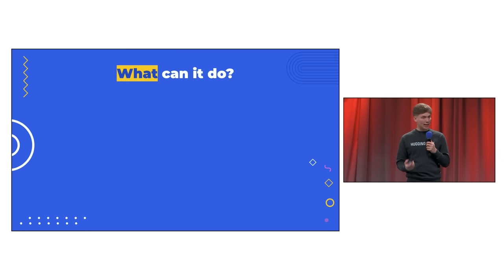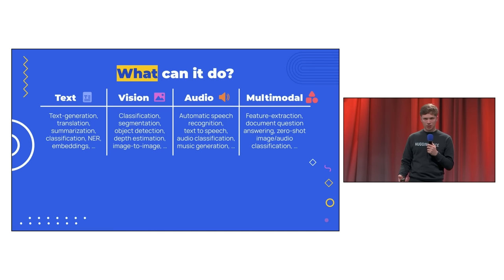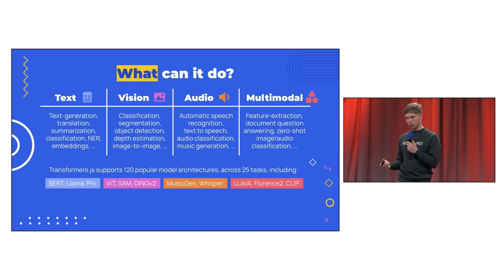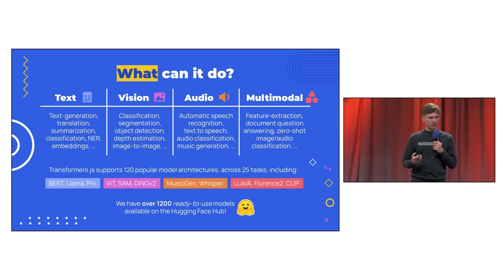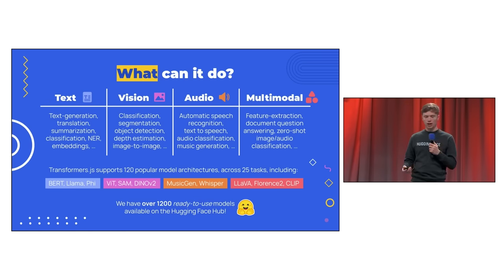In the last 18 months, we've already added support for 25 popular ML tasks, including text generation, object detection, and speech recognition, just to name a few. In total, we support 120 different model architectures, covering a wide range of input modalities. To make it really easy for users to get started, we converted over 1,200 models to be compatible with Transformers.js, and then uploaded the weights to the Hugging Face Hub.